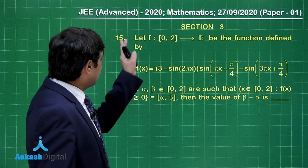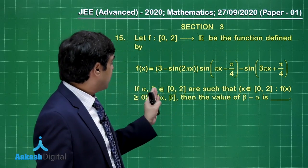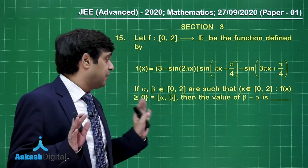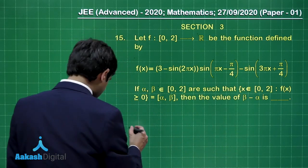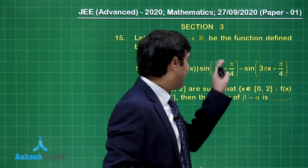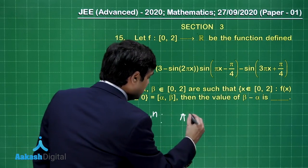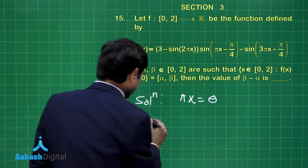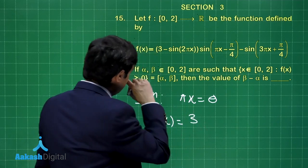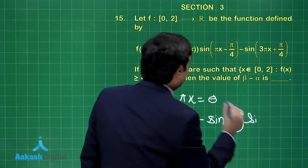Let us take up the next one. F is a function from [0, 2] to the set of real numbers defined by this expression. If alpha and beta belong to the closed interval [0, 2] and f(x) ≥ 0 on [alpha, beta], the question asks for the value of beta minus alpha. Let us try. We substitute pi·x as theta. Keeping f(x) as is, x in [0, 2] means theta is in [0, 2π].